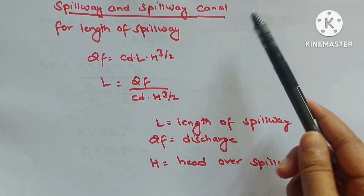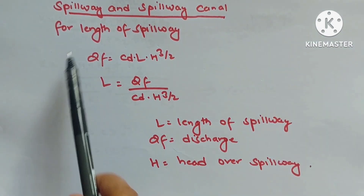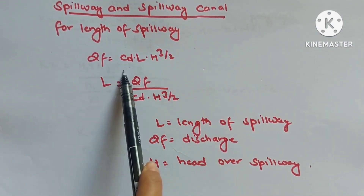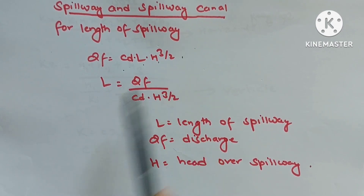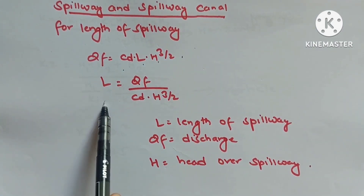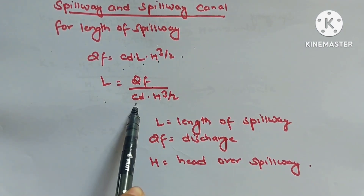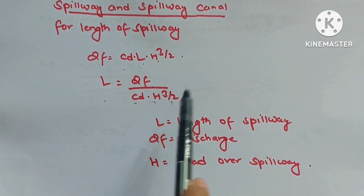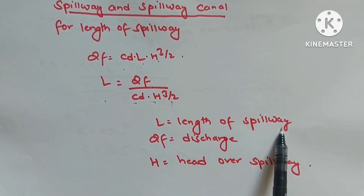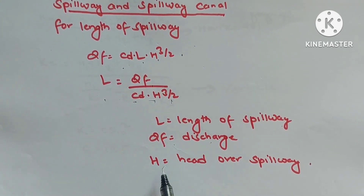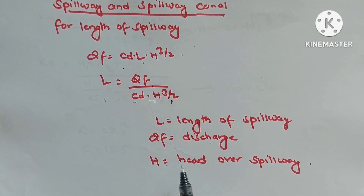Spillway design: QF = CD·L·H^(3/2), so L = QF/(CD·H^(3/2)), where L is length of spillway, QF is discharge of forebay, H is head over spillway.